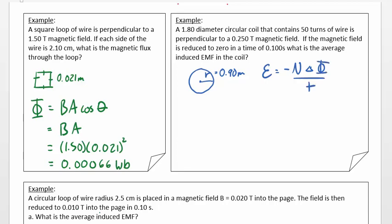Now, I just want to remind you that we know that phi is equal to BA cos theta. So there's three ways that we can generate an EMF. We can change the strength of the field. We can change the area of the loop. Or we can change the orientation.